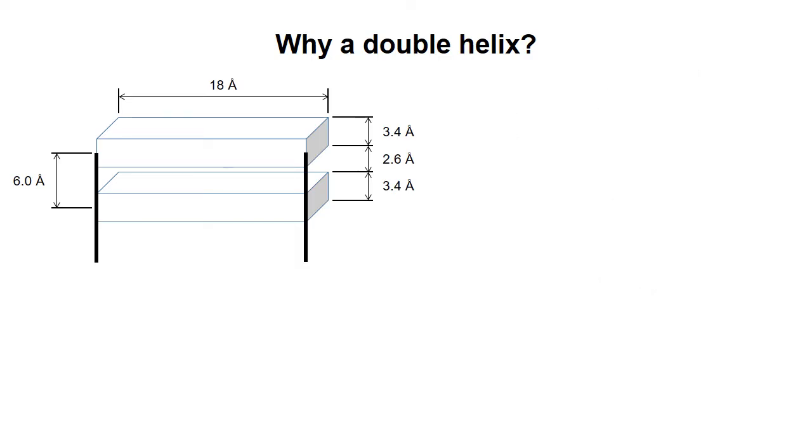The bases could come together in several ways. The most efficient way to cover the hydrophobic surfaces would seem to be to bring the one base pair straight down right on top of the other. The problem is that this would create steric clashes between the atoms of the sugar phosphate backbone.